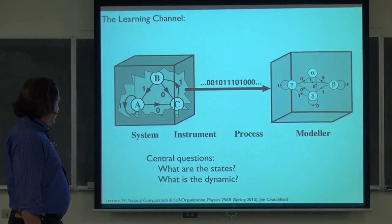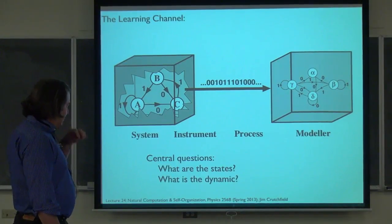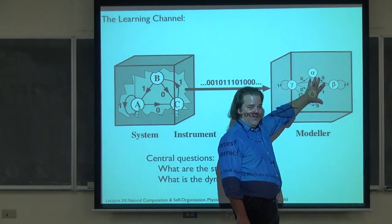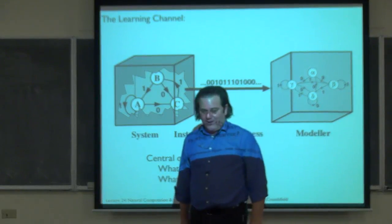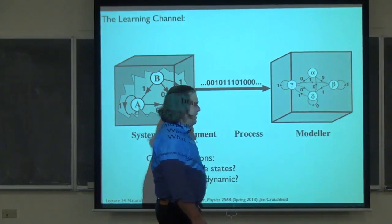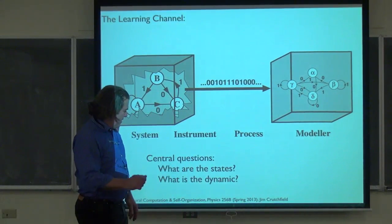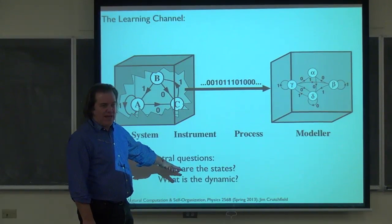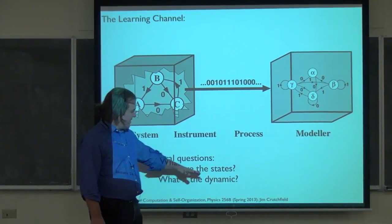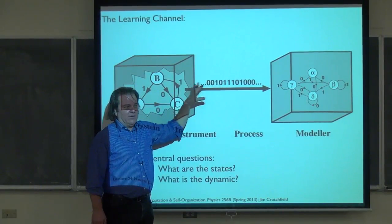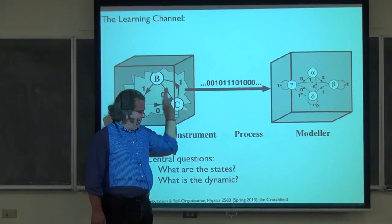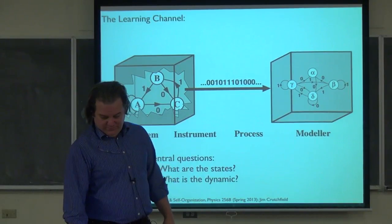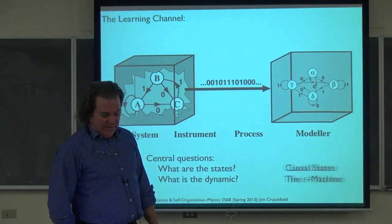So here we are, back at the learning channel. Finally, after many weeks, we're really addressing what a modeler should do — or an intelligent agent, or a piece of neural tissue — that helps an organism survive. There were two basic questions which came from how we introduced dynamical systems. We're looking for a dynamical system: what are the states given this impoverished, inaccurate view of what's going on in the hidden box? And what are the equations of motion — the dynamics over these states? The claim from the past two lectures is that these are now answered.